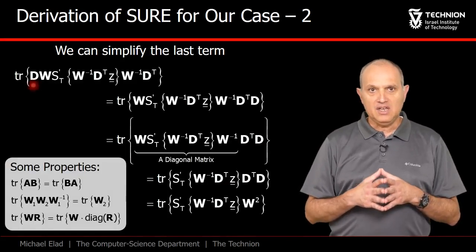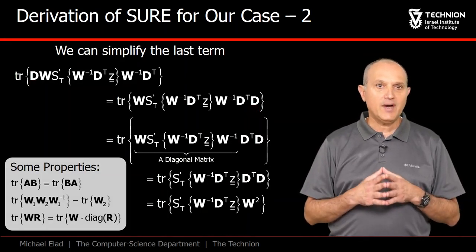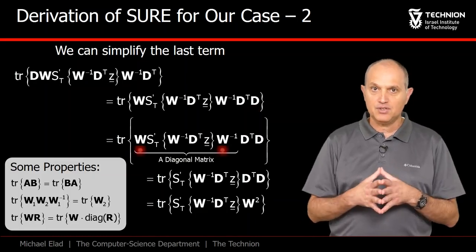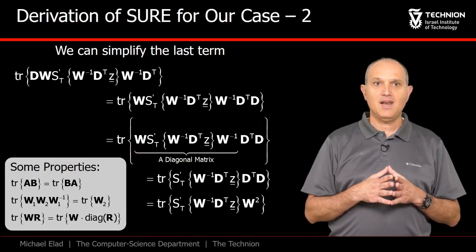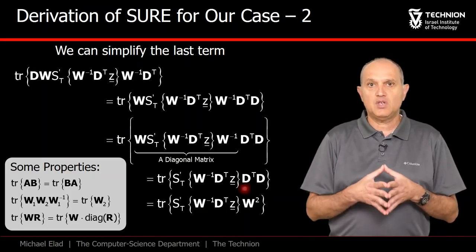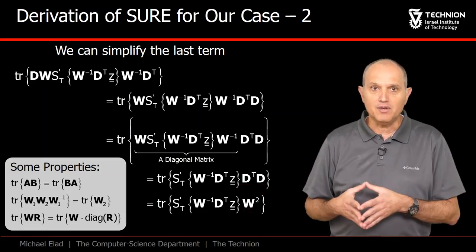First we move D from the left to the right. Then we observe that all the right part is some sort of a diagonal matrix, and thus W and its inverse cancel out. The last step is to notice that since this is a diagonal matrix, D transpose times D can be replaced by its diagonal, which is nothing but the square of W.